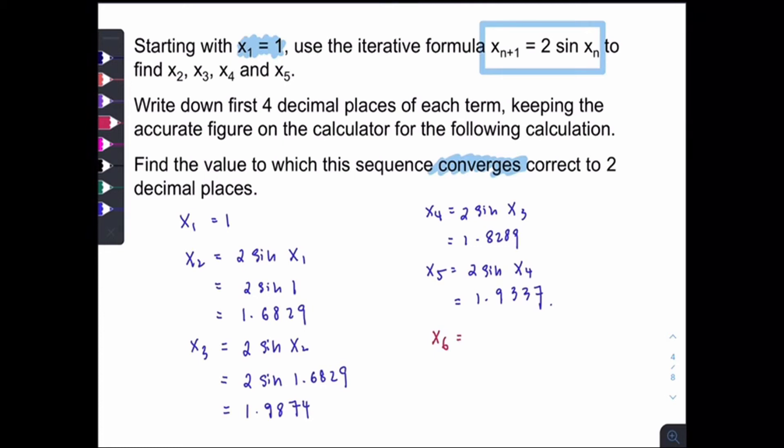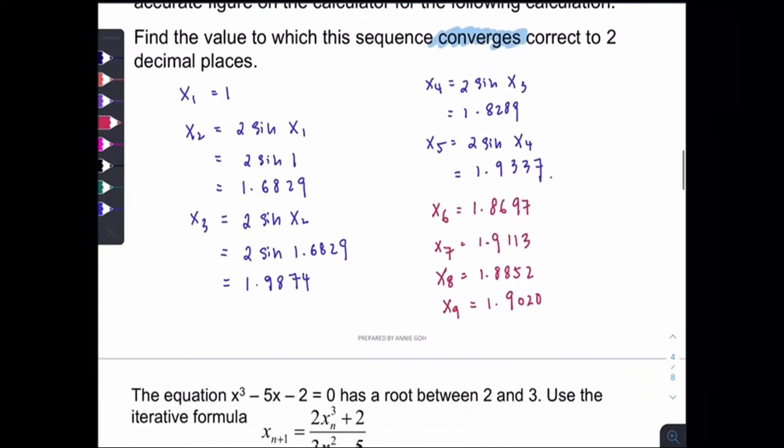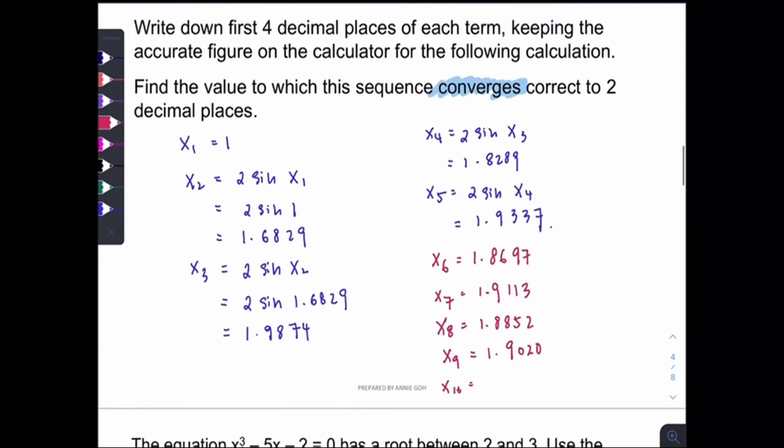So to get x6, you will just need to press your calculator and get 1.8697. x7 will be 1.9113. x8 is 1.8852. x9, 1.9020. x10, 1.8913.